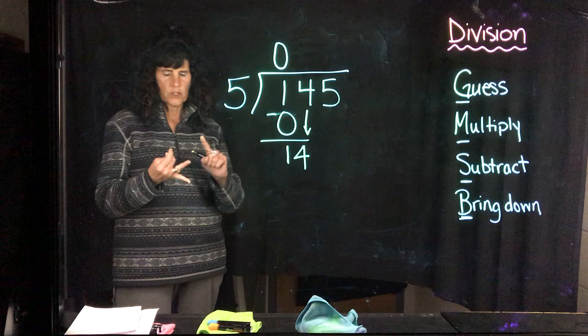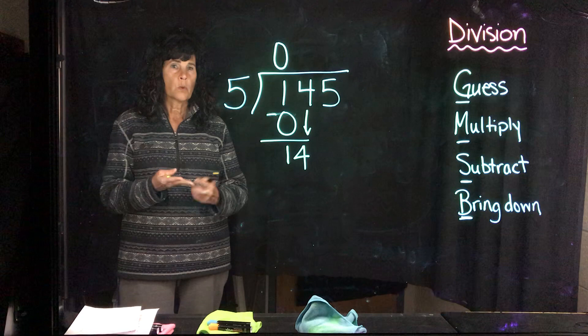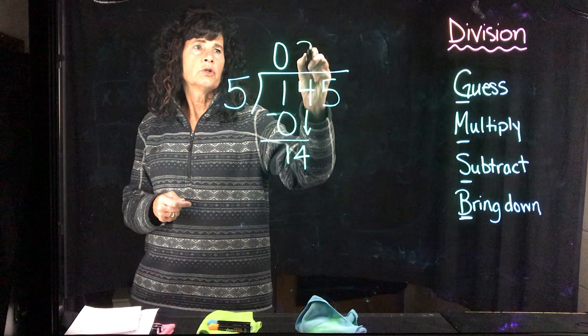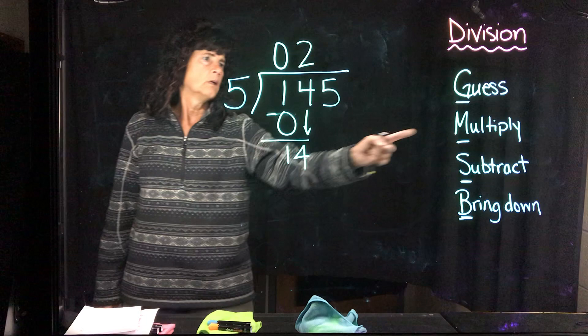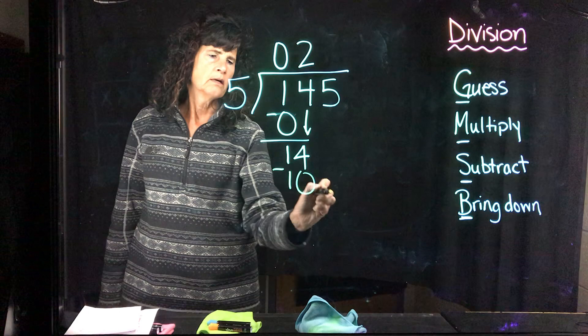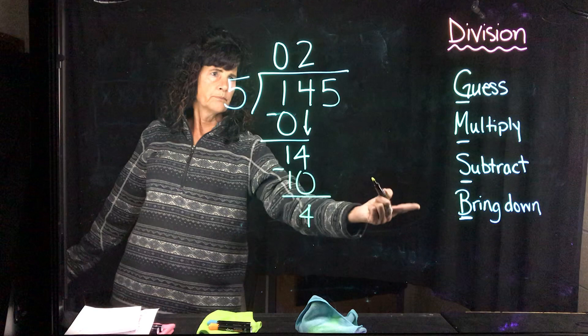Well, I know 1 times 5 is 5, 2 times 5 is 10, 3 times 5 is 15. Which one would you guess? Hopefully, you're going to guess 2 times 5, because 3 times 5 is 15, but that's too big, right? We cannot guess something that's higher than this number. Alright? So, we're going to guess a 2. Multiply. 2 times 5 is 10. Subtract. 14 minus 10 is 4. What do I do next?